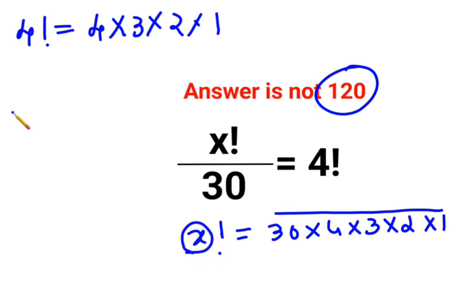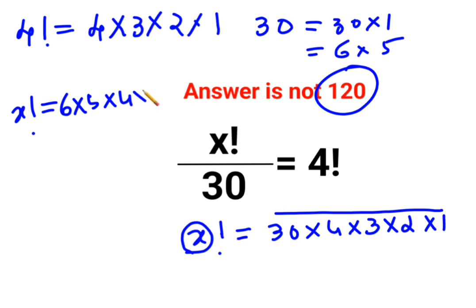So what will happen here is, instead of 30, I can write 30 as 30 into 1, or I can write it as 6 multiplied by 5. So 6 multiplied by 5 multiplied by 4 multiplied by 3 multiplied by 2 multiplied by 1.